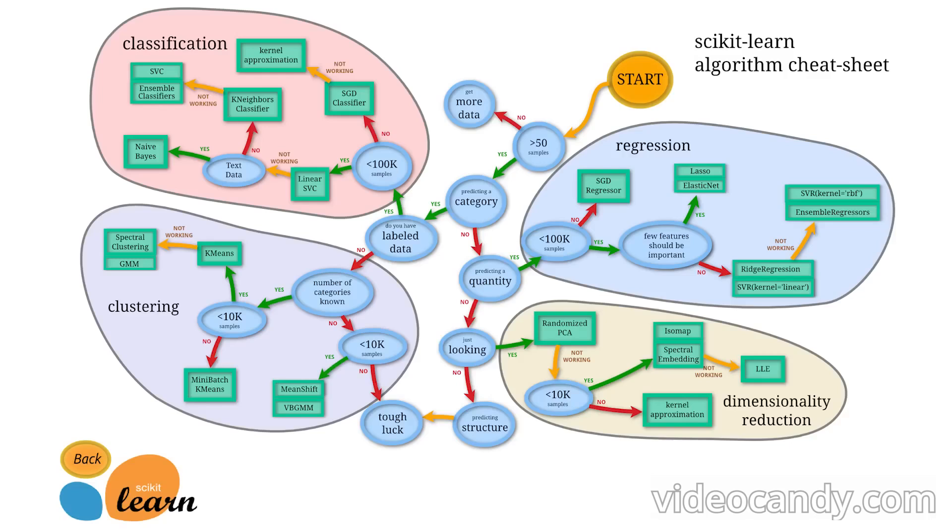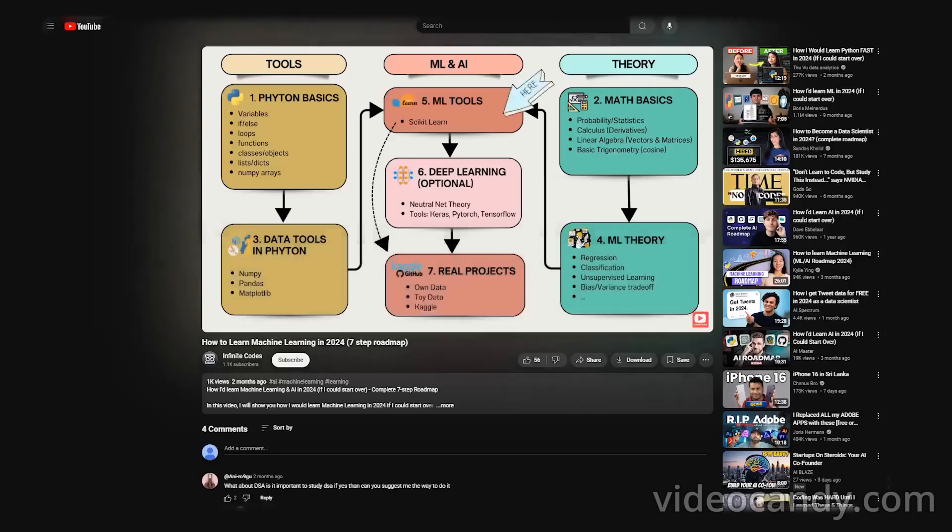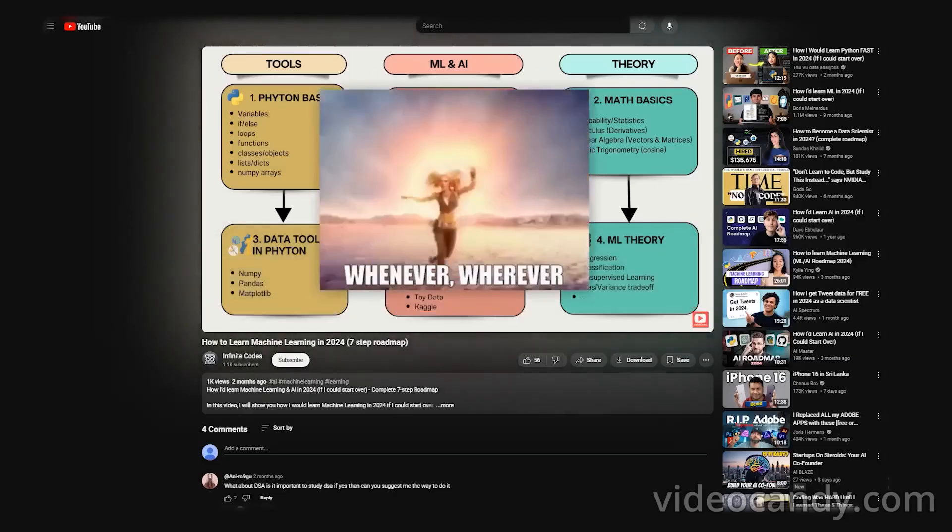If you are overwhelmed and don't know which algorithm you need, here is a great cheat sheet by scikit-learn that will help you decide which algorithm is right for which type of problem. If you want a roadmap on how to learn machine learning, check out my video on that.